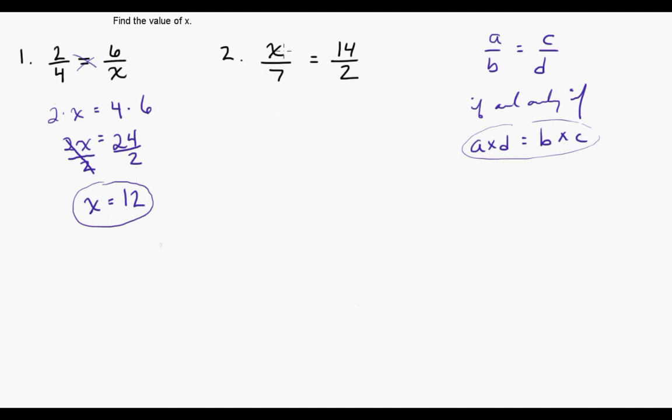Let's look at the second example. Here we have X over seven equals fourteen over two. Again we're going to do the same thing. We're going to do X times two equals seven times fourteen. X times two is two X and seven times fourteen is equal to ninety-eight. Again we want to isolate X, so we're going to divide both sides of the equation by two. That gets X by itself.